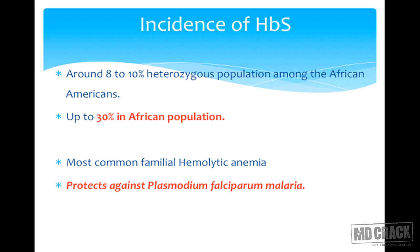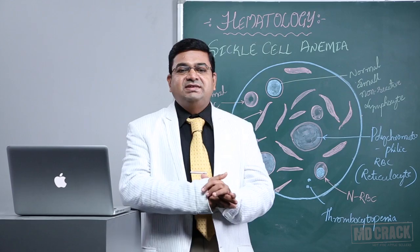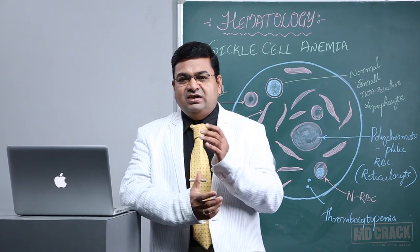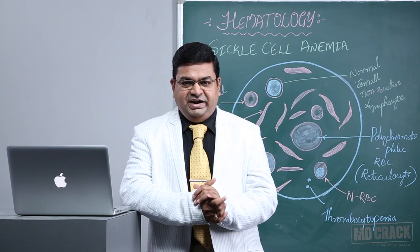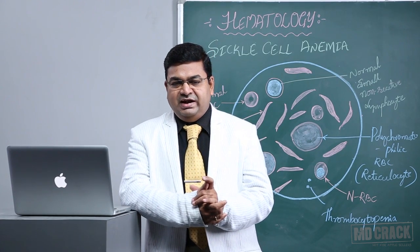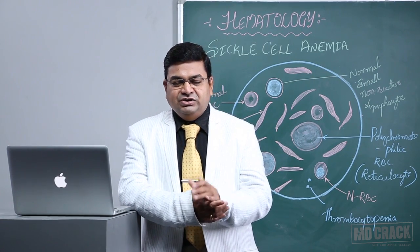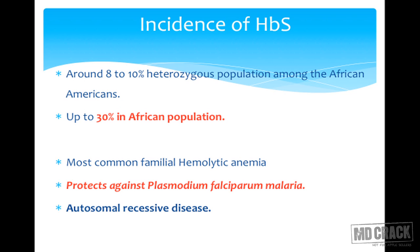Very peculiarly, sickle cell anemia is known to protect against Plasmodium falciparum malaria. This is mainly because sickle RBCs are almost deoxygenated — there is no oxygen in those RBCs — and the malaria parasite cannot survive in such an environment. This gives indirect protection against falciparum malaria. It is transmitted in an autosomal recessive pattern.